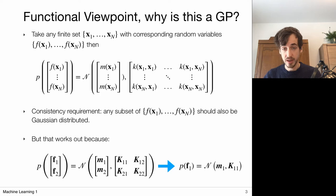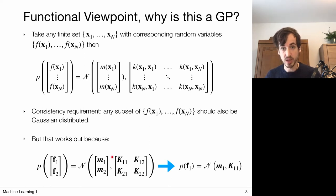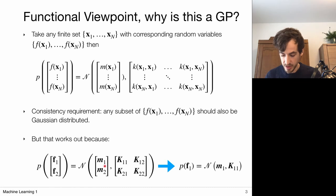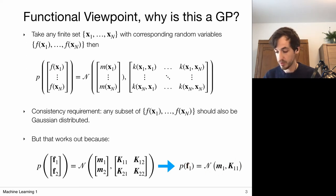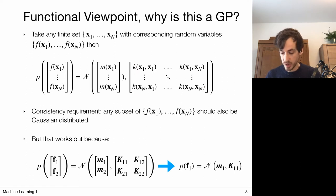Let's verify this is indeed a Gaussian process: any finite subset of random variables must also be Gaussian distributed. This follows directly from the marginalization property of Gaussians. I can split the observation set into two parts, f1 and f2, split the covariance matrices and mean vector, and the distribution for f1 is also Gaussian. This holds for all observations x because the kernel is a proper kernel, meaning the Gram matrix is always positive definite.